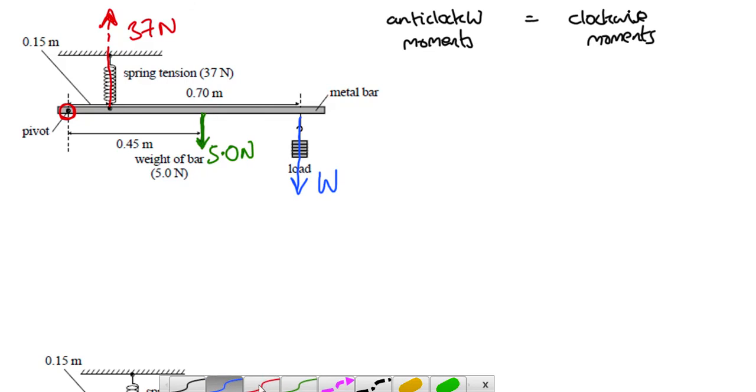Now, this spring tension is acting at this distance. So, there it is. Spring tension is at 0.15 metres. The weight is acting at 0.45, but be careful here because the arrowheads aren't particularly clear. And the distance of the weight, it's 0.7 from the spring, but the spring is 0.15 from the pivot. So, the total distance for the weight perpendicular is 0.7 plus 0.15. So, it's 0.85. Trap for the unwary.